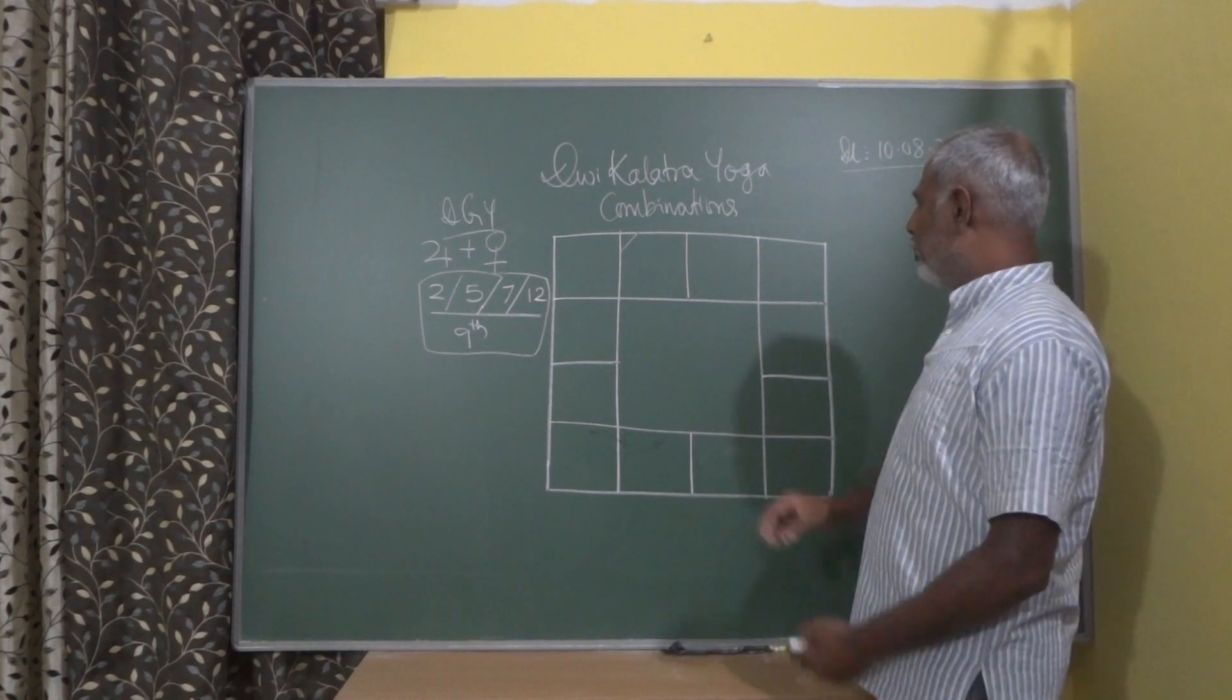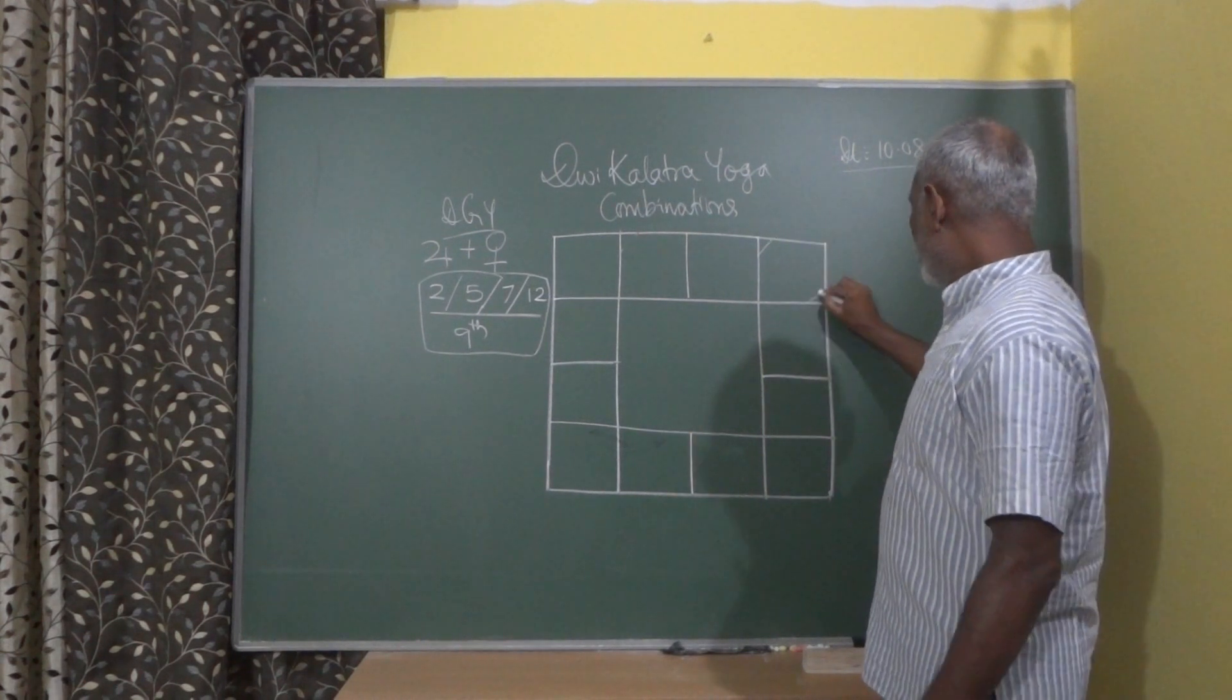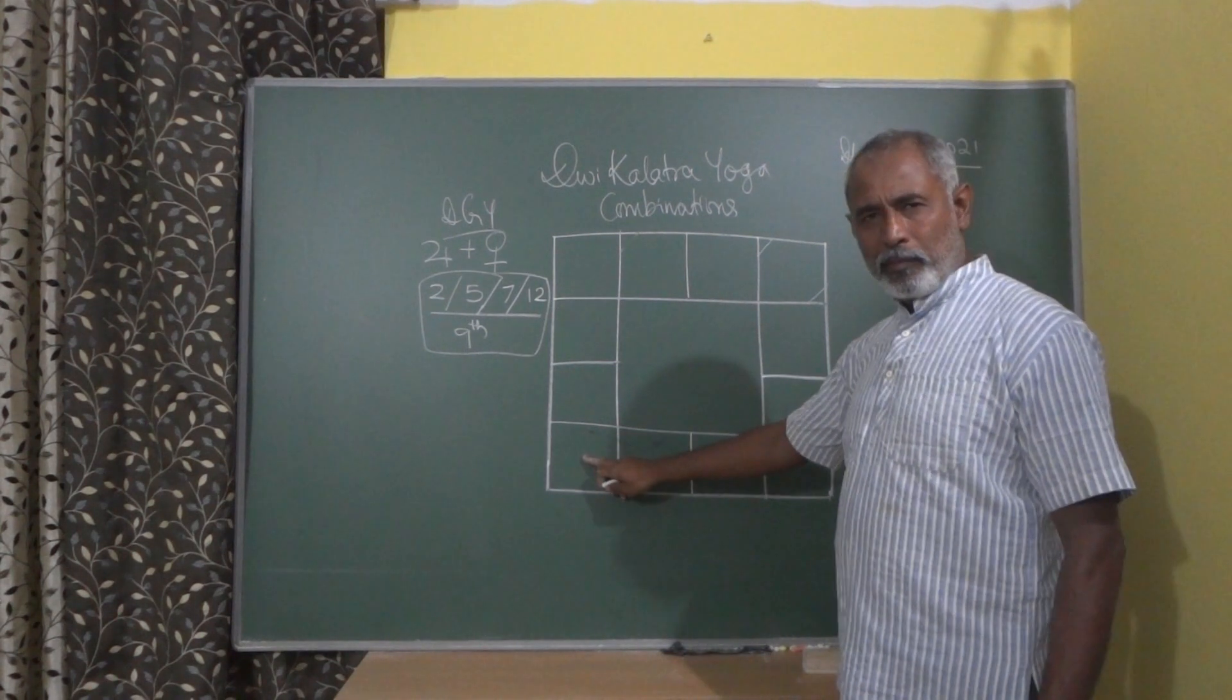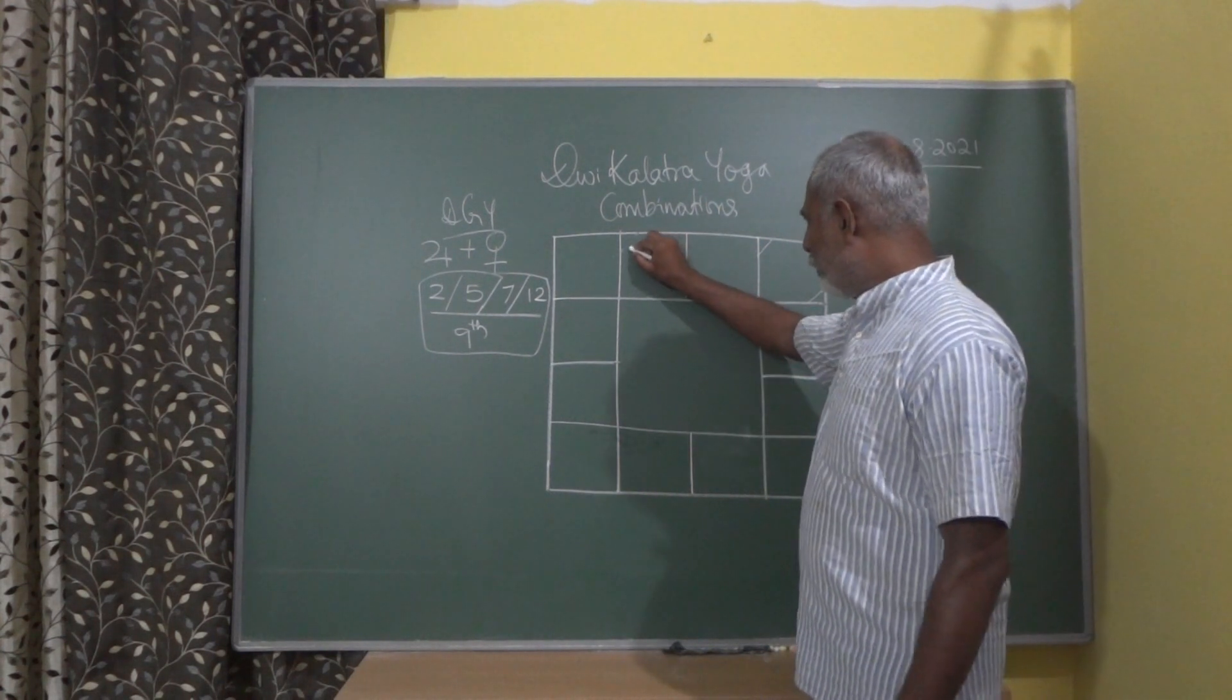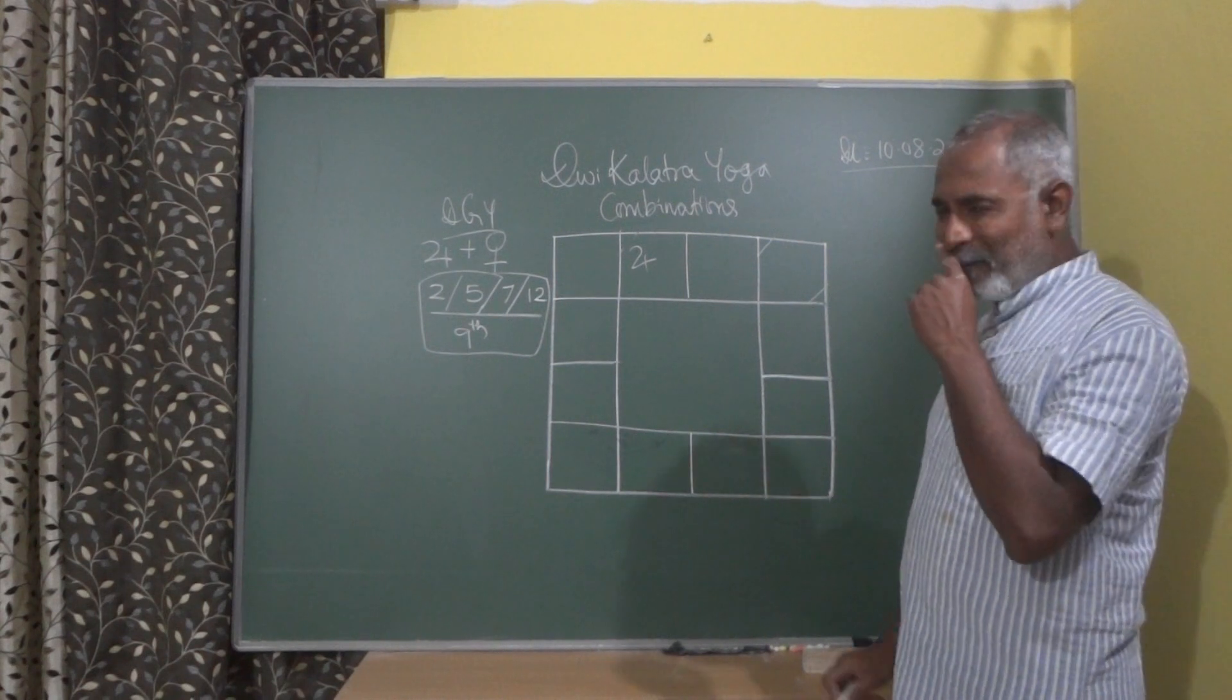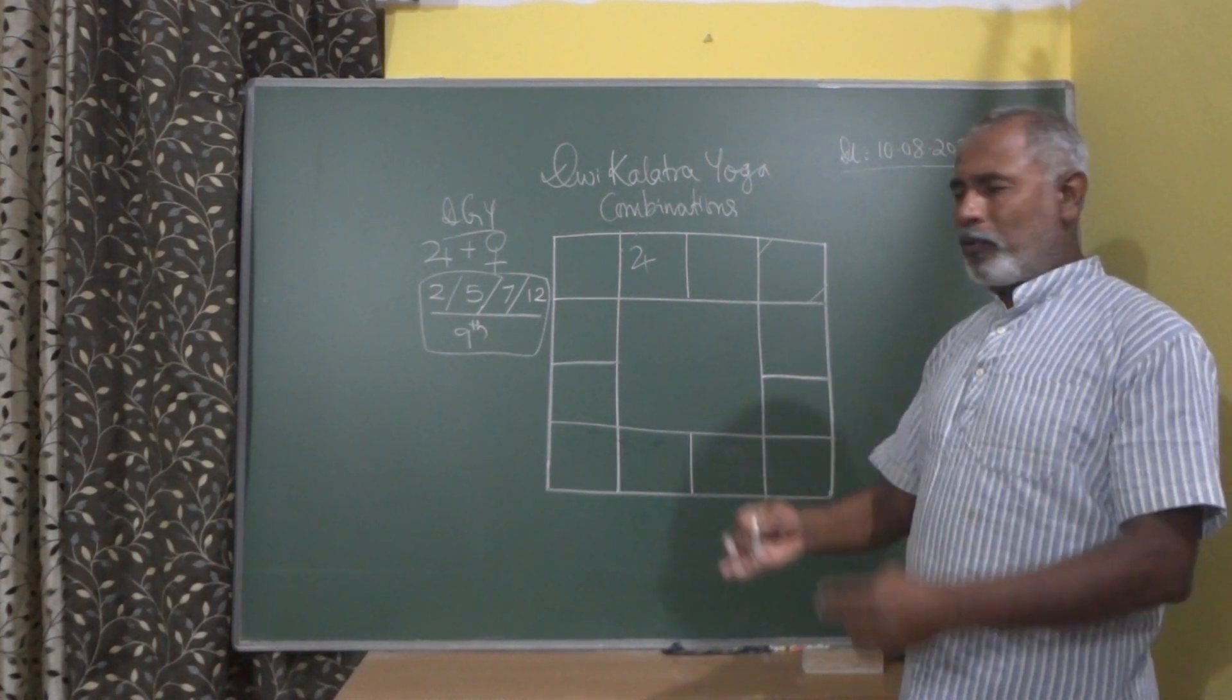So if we go to another example, let me take Mithuna ascendant, and once again you can see that Jupiter becomes the 7th lord, and when the 7th lord is posited, let's say in the 11th house. 7th lord is in the 11th house. But the planets associated with the 7th lord is of high importance.